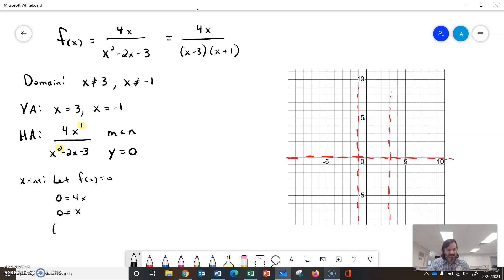When I plug that in, I get the point (0, 0). Since that's also on the y-axis, I know that's also my y-intercept. So I've got this graph broken into three parts.